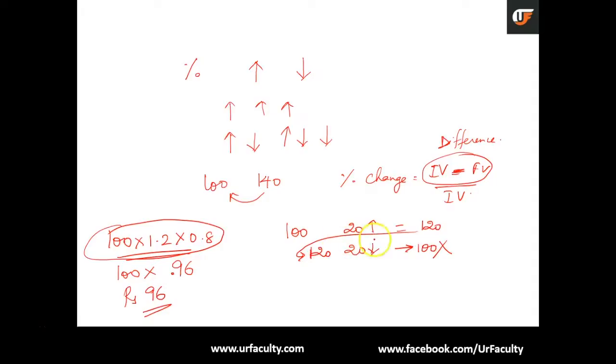If you go by step by step procedure, 100 increased by 20 became 120. 120 decreased by 20, how much should you reduce it by? 24. 24 rupees you have to reduce it by, which would mean you have to reduce 120 minus 24, which is equal to 96. I hope you are able to appreciate the concept here.